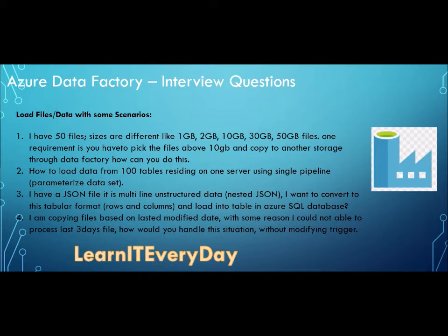I have a JSON file with multi-line unstructured data and I want to convert it to tabular format. There are many cases where your source is in JSON, XML, or Excel format. All these features are available in Data Factory - you can flatten your JSON or XML file. You need to create your dataset in a specific way. There is a dedicated video on how to flatten a JSON file - the link will be in the description.